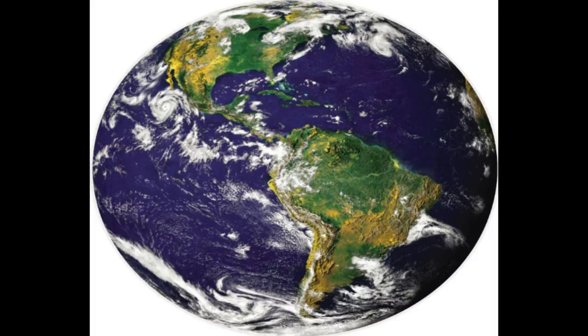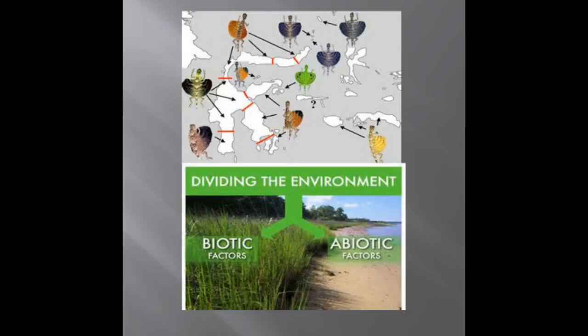Global ecology examines the influence of energy and materials on organisms across the biosphere. Ecologists have long recognized global and regional patterns of distribution of organisms within the biosphere. Biogeography is a good starting point for understanding what limits geographic distribution of species. Ecologists recognize two kinds of factors that determine distribution: biotic or living factors, and abiotic or non-living factors.